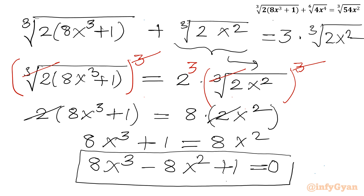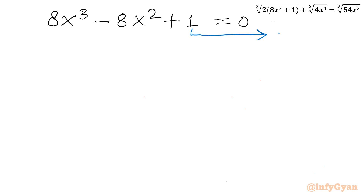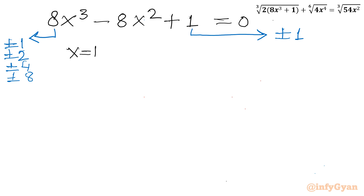For this cubic equation 8x³ − 8x² + 1 = 0, I will use the rational root theorem and synthetic division method. The factors of the constant term (1) are ±1. The factors of the leading coefficient (8) are ±1, ±2, ±4, ±8. I need to consider the ratio of constant to leading coefficient factors. Let's plug in x = 1: 8 − 8 + 1 = 1, which is not 0, so x = 1 is not a solution.